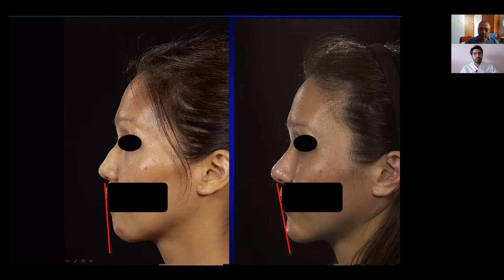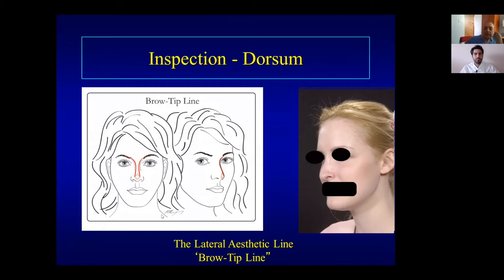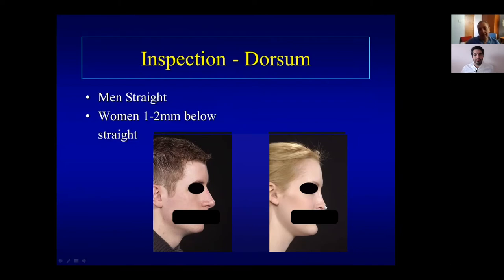Now the dorsum — very important for the overall appearance of the nose. The brow-tip line, or lateral aesthetic line, is a shadow running from the eyebrow to the tip that gives the appearance of beauty, especially in women. In a deviated nose this line is broken, but after straightening the nose the shadow reappears, giving a balanced appearance.